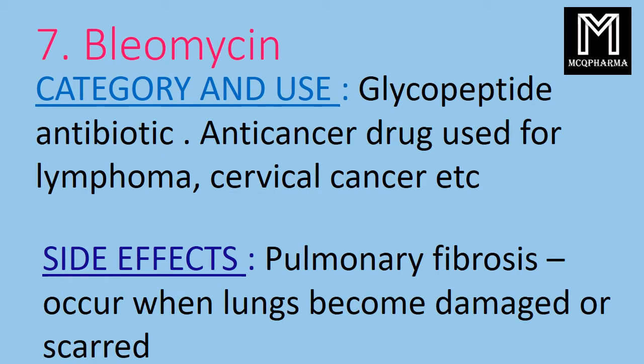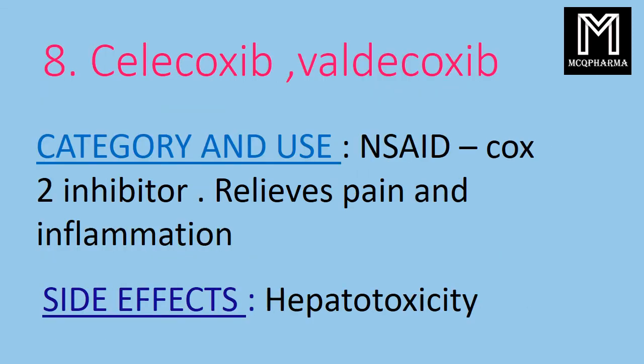Bleomycin — it is a glycopeptide antibiotic and anticancer drug used for lymphoma, cervical cancer, etc. Side effects: pulmonary fibrosis, which occurs when the lungs become damaged or scarred.